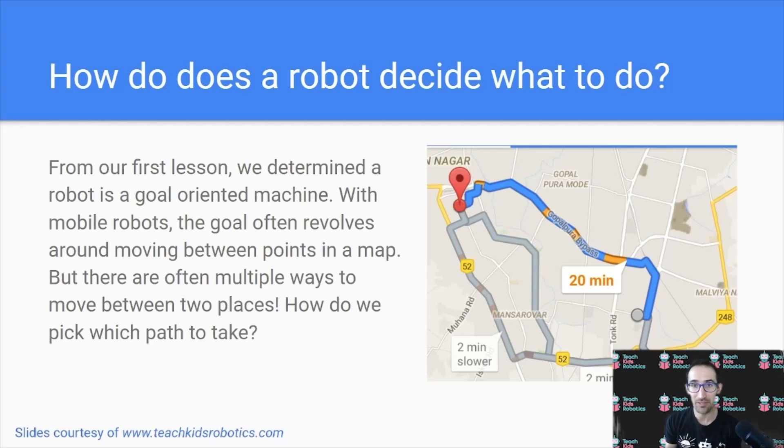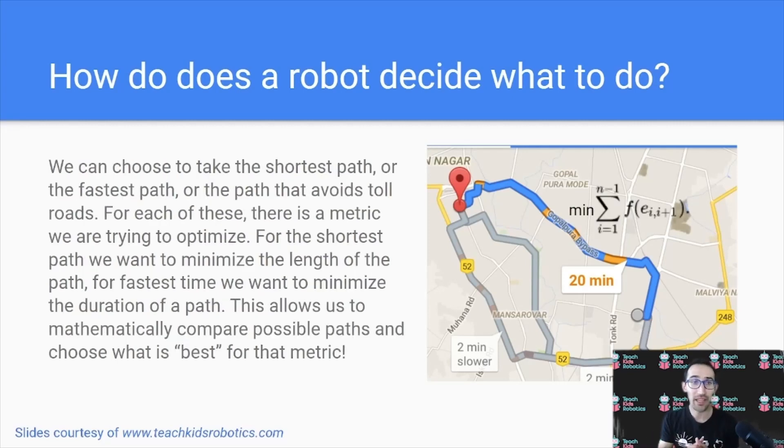Consider for example if you've used Google Maps, and you can see there are multiple routes getting you from a starting location to your destination. How do you determine which one of these routes is best? We can choose to take either the shortest path, or the fastest path, or the path that avoids toll roads. But for all of these, there is a metric we are trying to optimize.